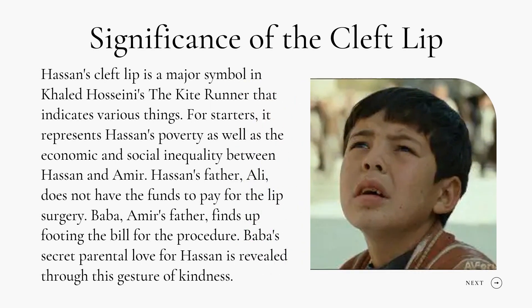Significance of the cleft lip: Hassan's cleft lip is a major symbol in The Kite Runner that indicates various things. First, it represents Hassan's poverty as well as the economic and social inequality between Hassan and Amir — Hassan's father Ali does not have the funds for the lip surgery, while Baba, Amir's father, ends up footing the bill. Baba's secret parental love for Hassan is revealed through this gesture of kindness. The cleft lip also represents Hassan's entire character, aids in the development of his past, enables the revealing of Hassan and Baba's relationship, and stresses Amir's eventual character change.